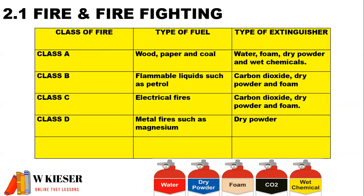For a class D fire, such as metal fires like magnesium, we would use dry powder. For a class K fire, due to cooking fats and oils, the extinguisher we would use is a wet chemical fire extinguisher.